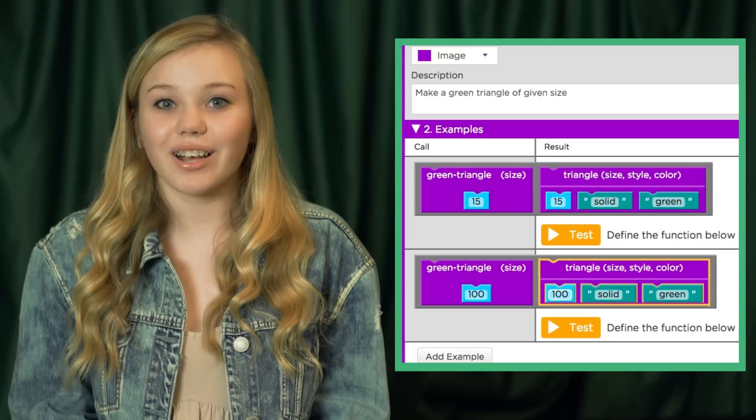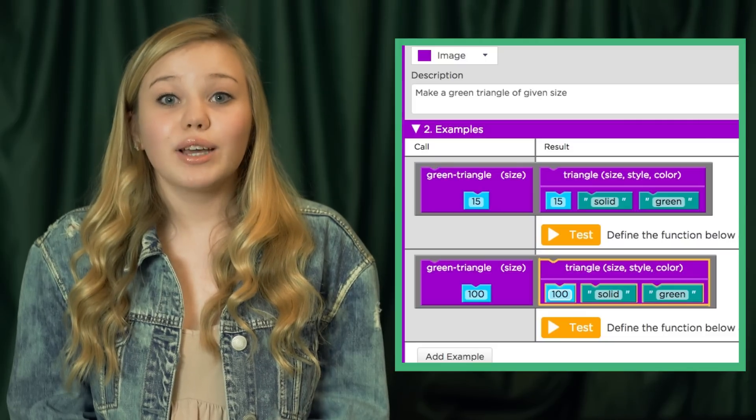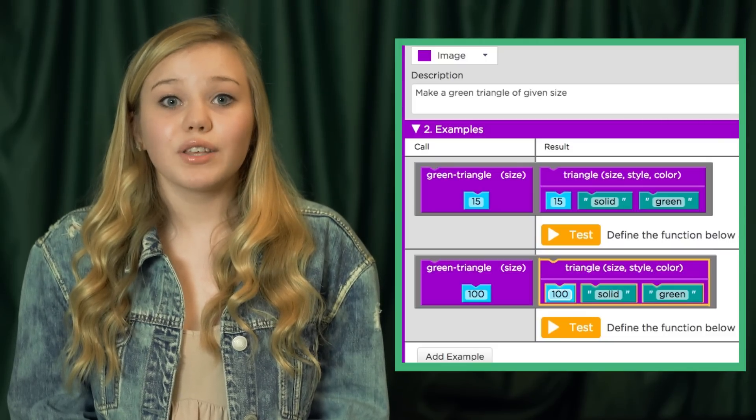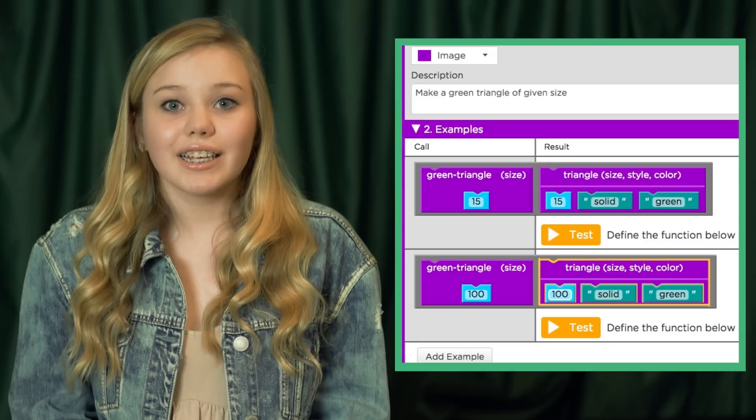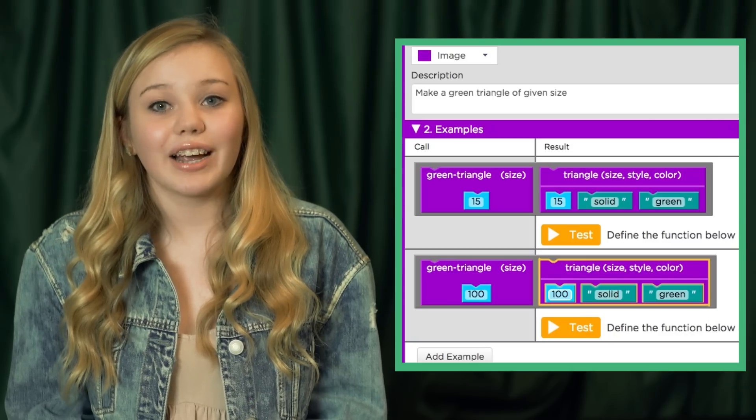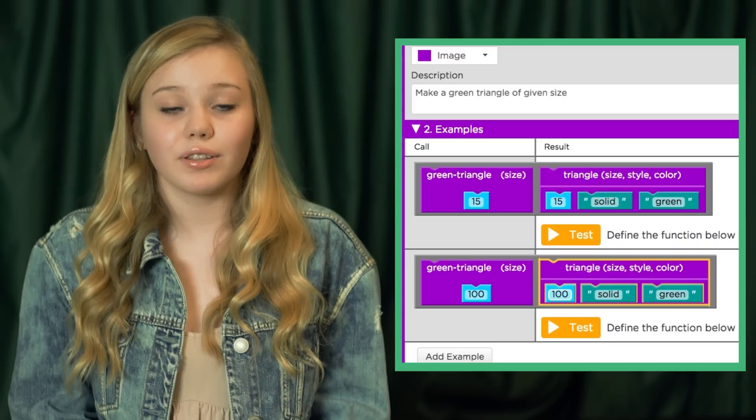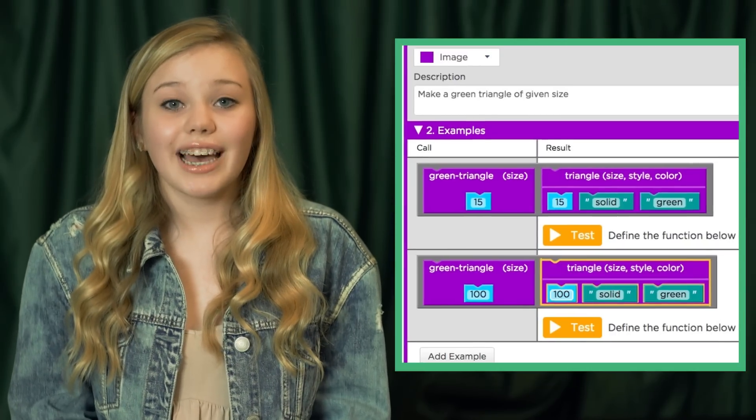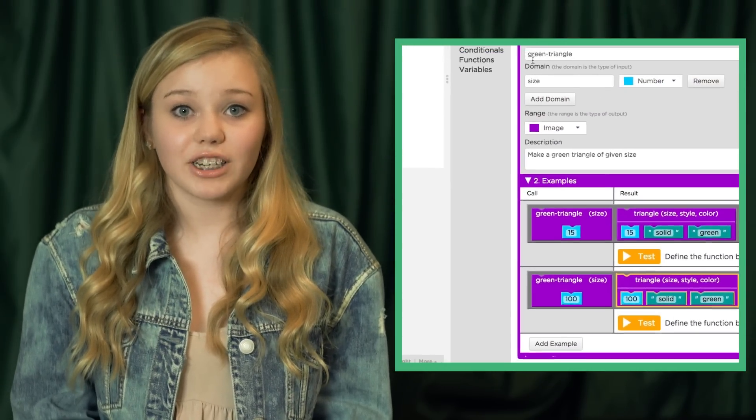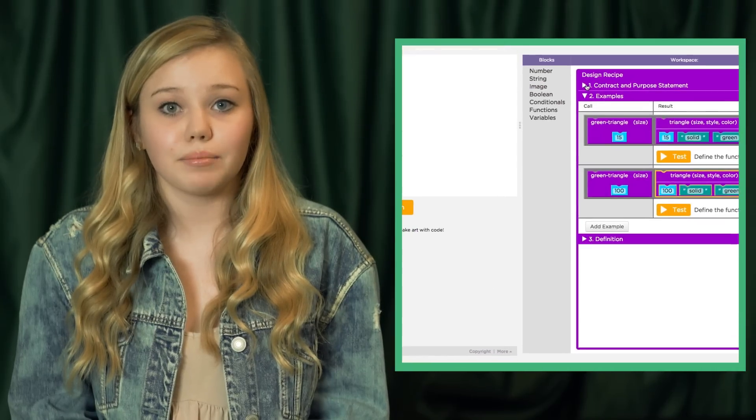If we compare the two examples, we'll see that the only thing that changes between them is the size parameter passed to the triangle function and those directly correlate to the input the function was passed. With that knowledge, we can write a function definition that replaces that changing element with a variable.